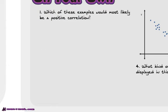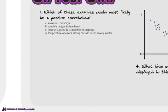Well, which of these examples would most likely be a positive correlation? Snow on Thursdays, candle's height versus the time it was burned, the price of a pizza and its number of toppings, and the temperature of a rock sitting outside in a snowy day. Which of these most likely has a positive correlation?